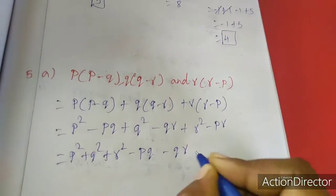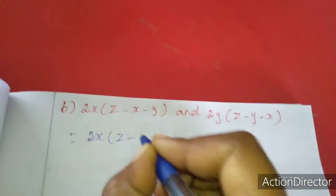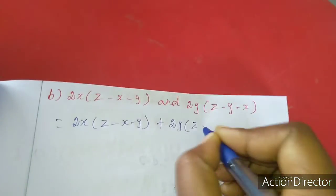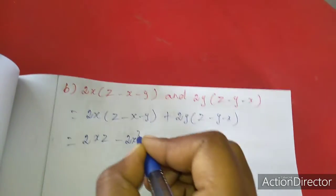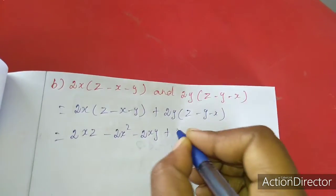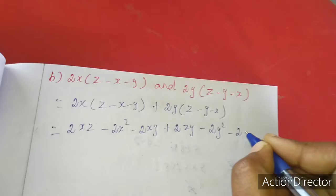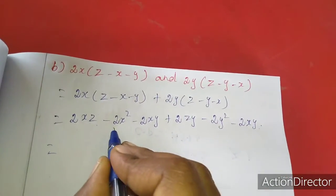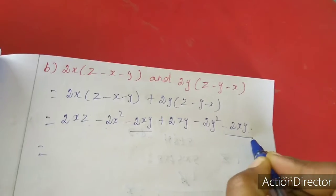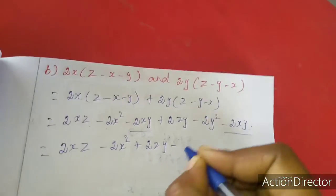Now second subdivision b sum, same method. Adding 2x(z - x - y) + 2y(z - y - x). Multiply inside: 2xz - 2x² - 2xy + 2yz - 2y² - 2xy. Collecting: 2xz - 2x² + 2yz - 2y² - 4xy. That's all.